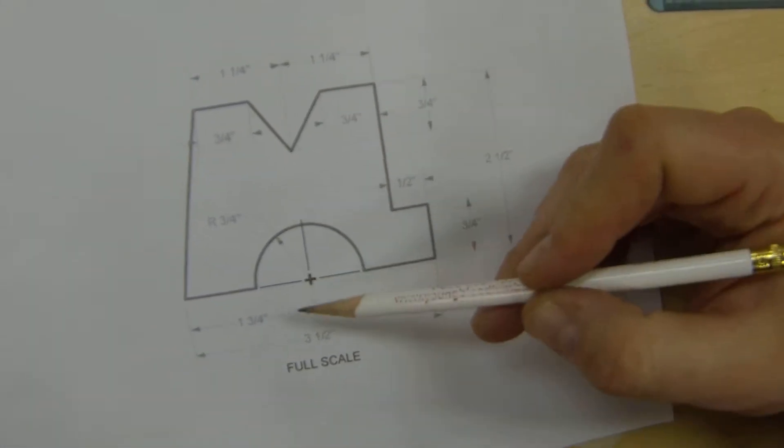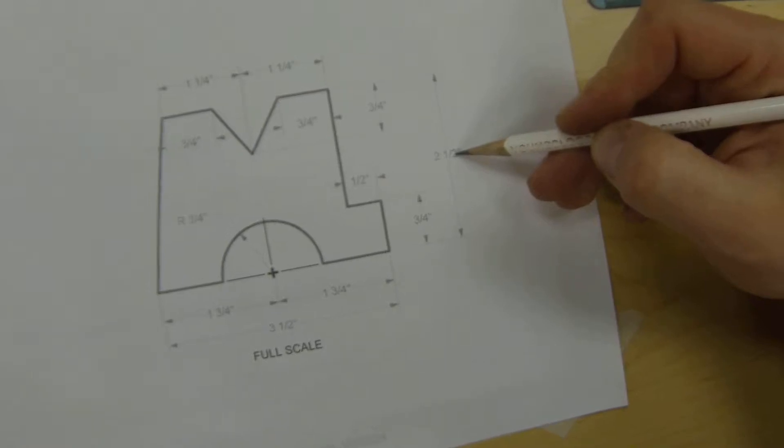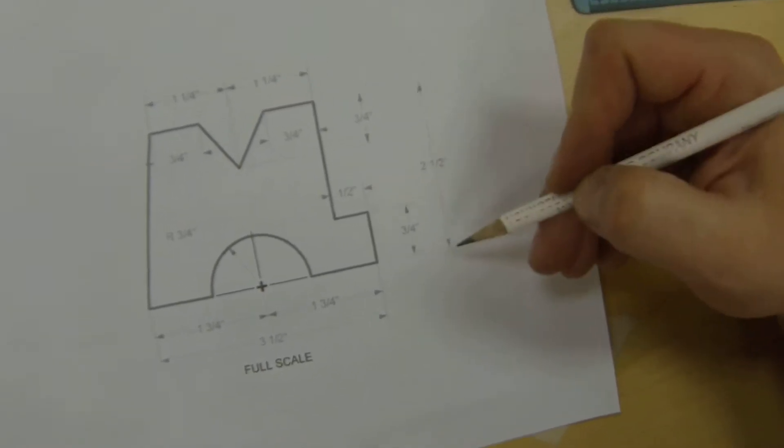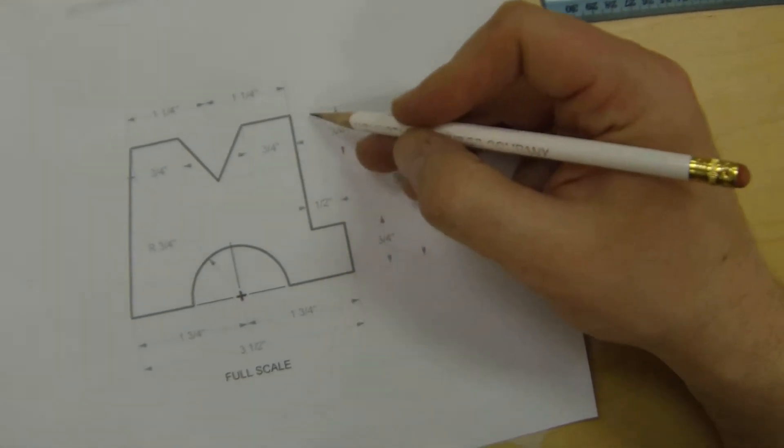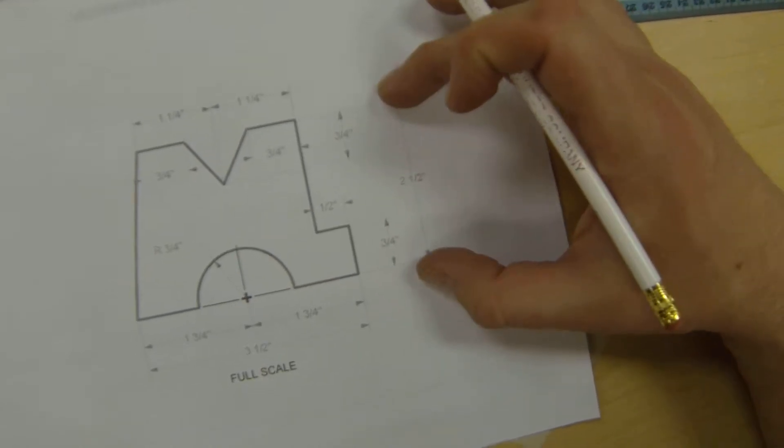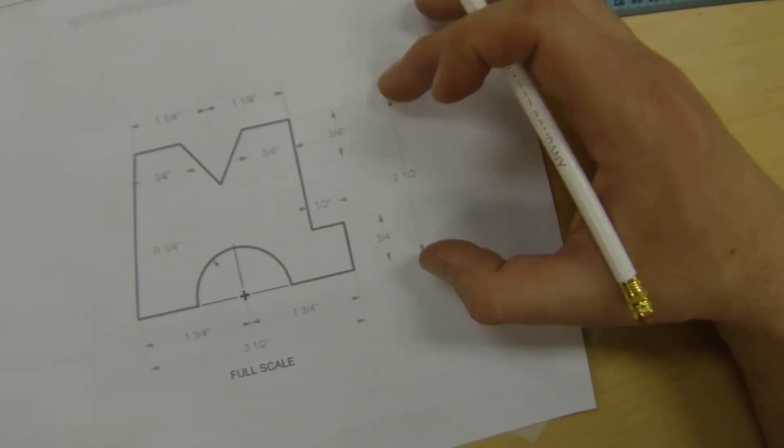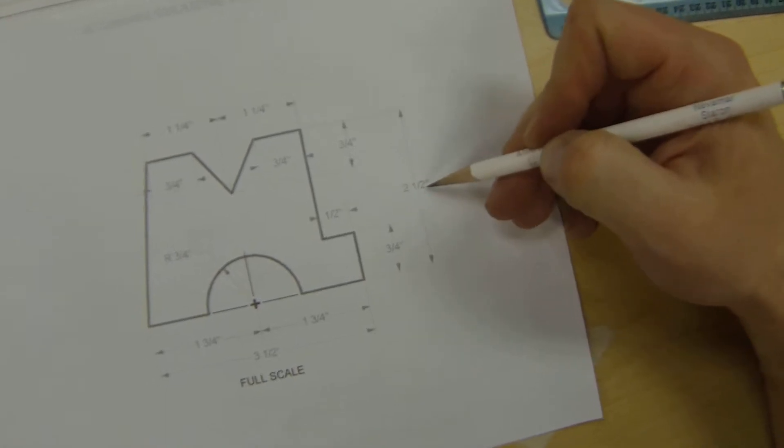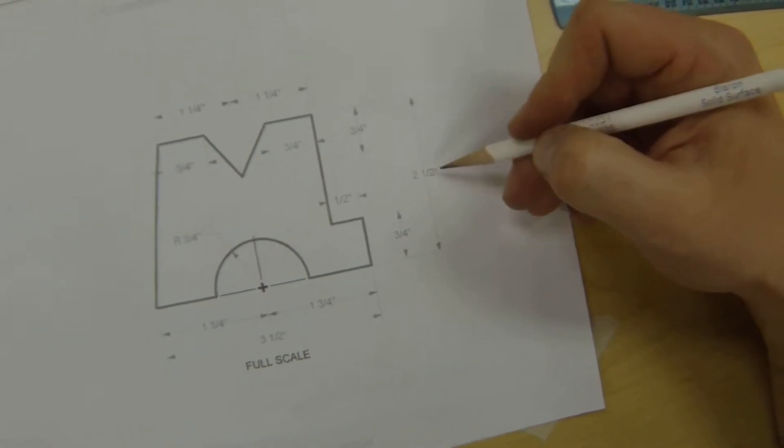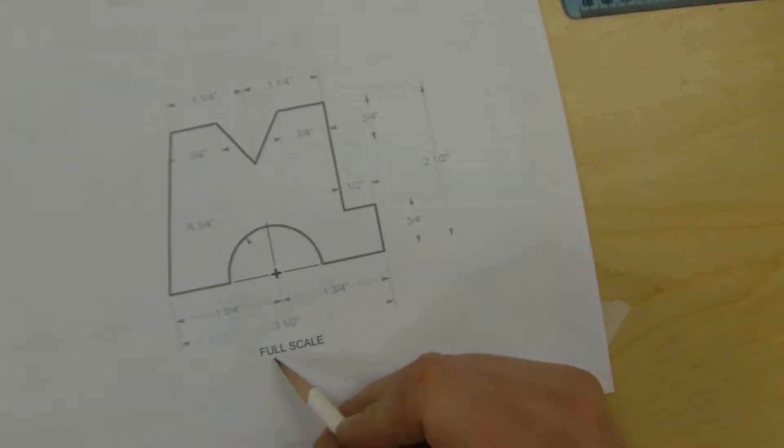There are some other details around here. These are called dimension lines. Dimension lines have arrows at both ends, they have extension lines coming off the part to give you a start and end to the dimension, and then they have a number in the center.